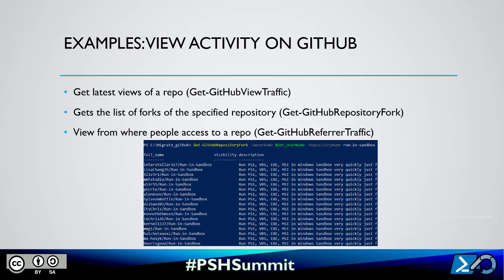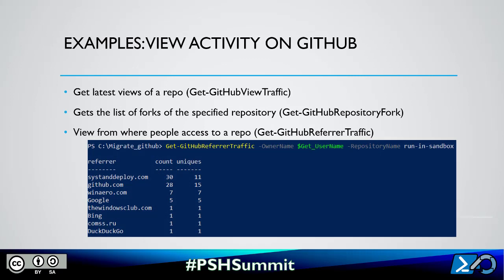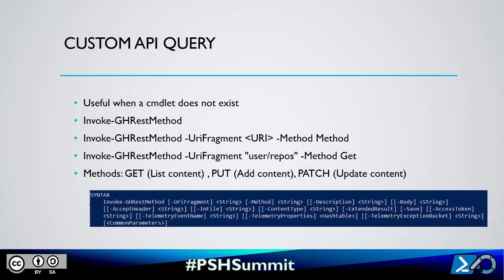We can also get information about the location — where people access a repository. For instance, people access the link using my website, Google, or other websites. Now, if you don't find the cmdlet to manage a resource, you can use a custom query. This cmdlet is Invoke-GHRestMethod. It allows you to manage a custom query. Just use the -UriFragment parameter and add the method.